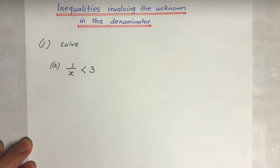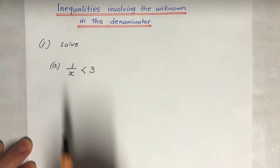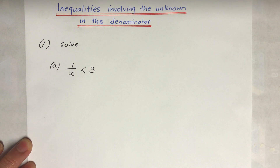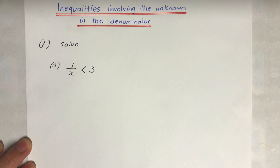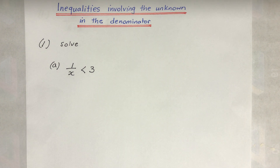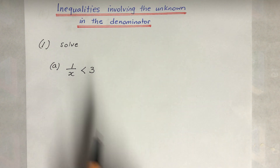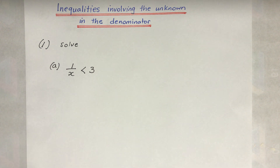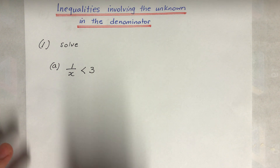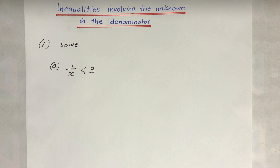We need to solve inequalities involving the unknown in the denominator. We might be tempted to multiply both sides by x, but that's not a good idea because we don't know what x is — x could be positive or negative. When you multiply by a negative number, the inequality sign changes, which means we'd be changing the actual question, which we don't want. To be 100% safe, we need to multiply by a positive number.